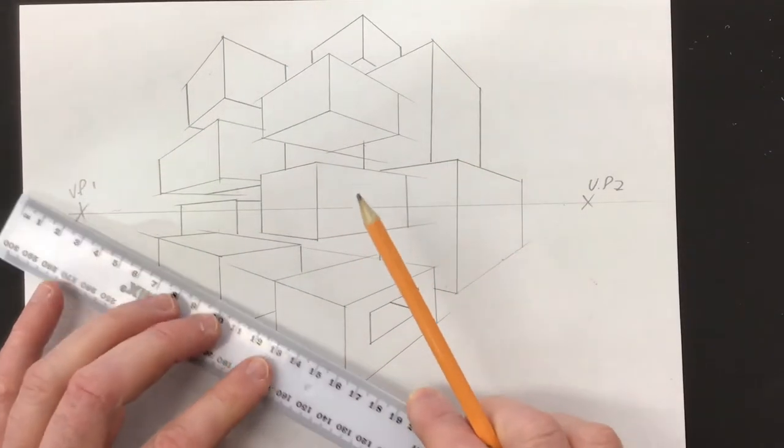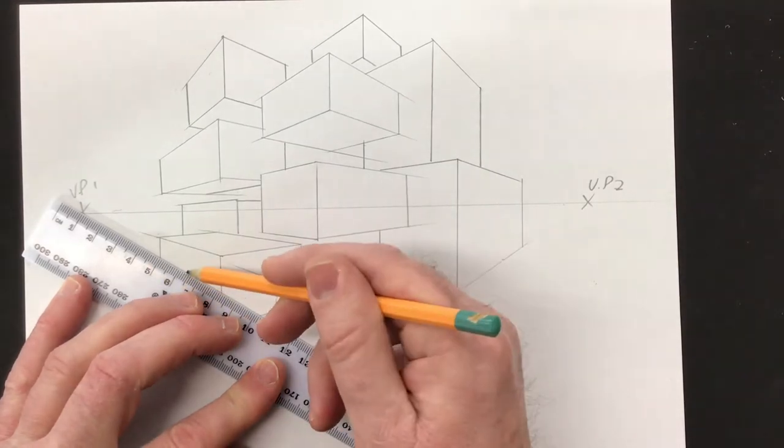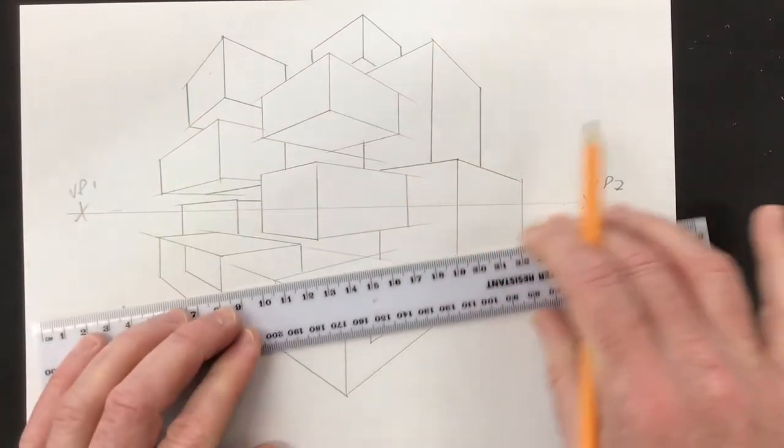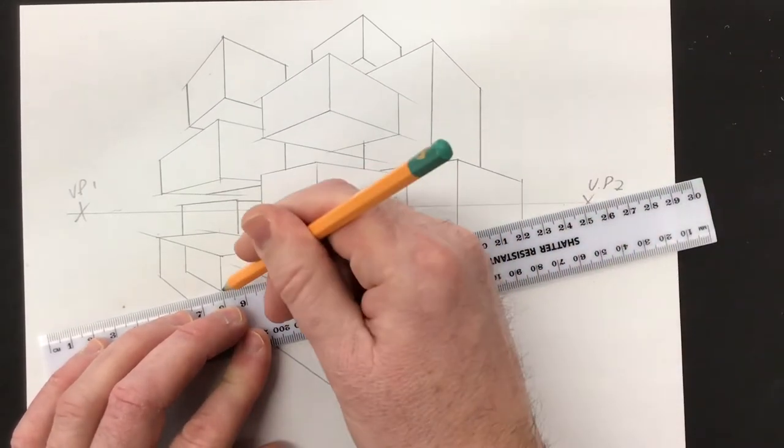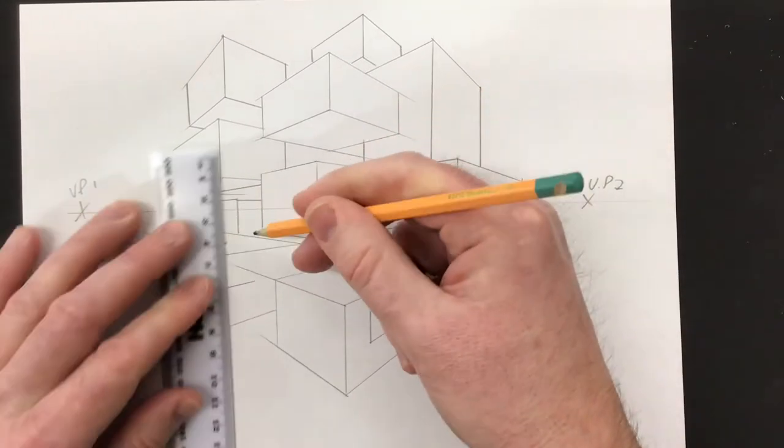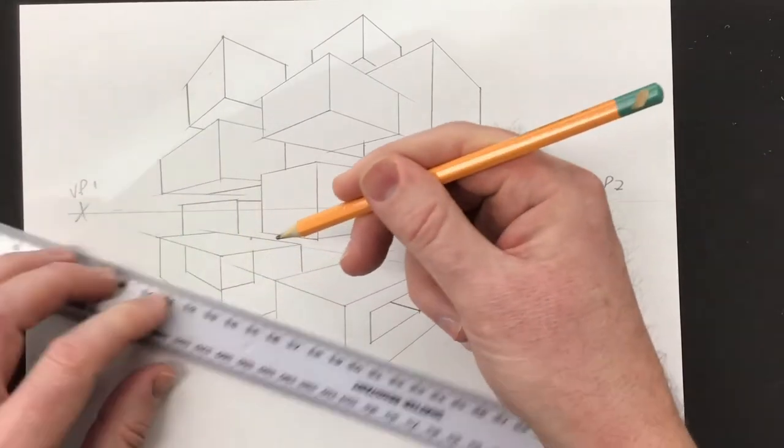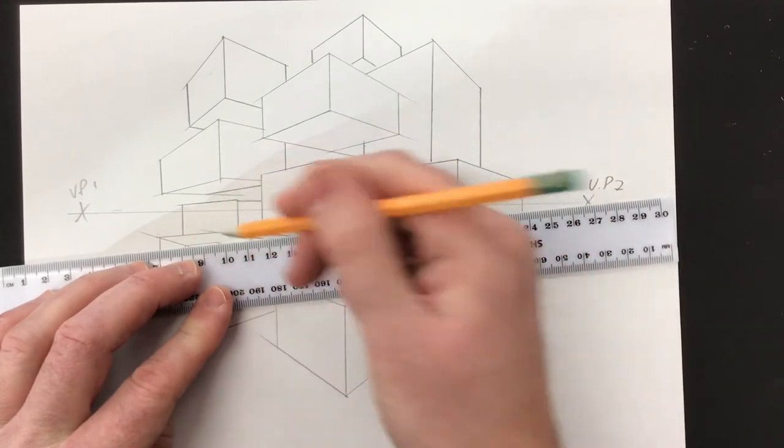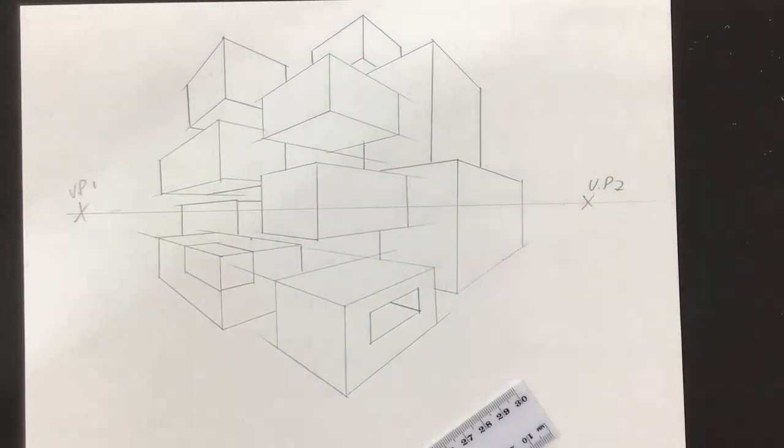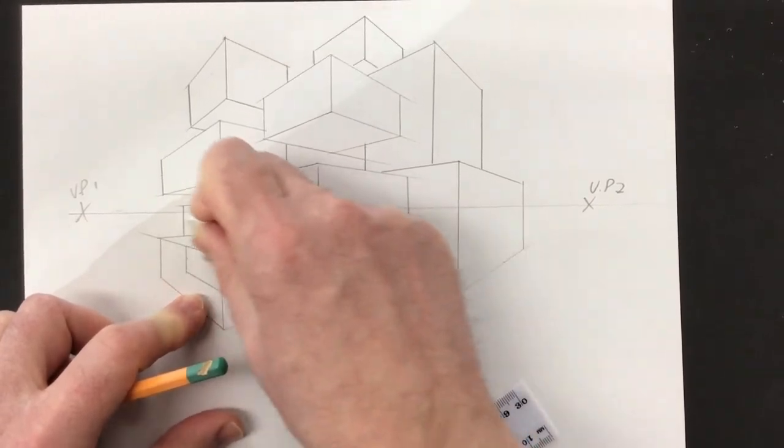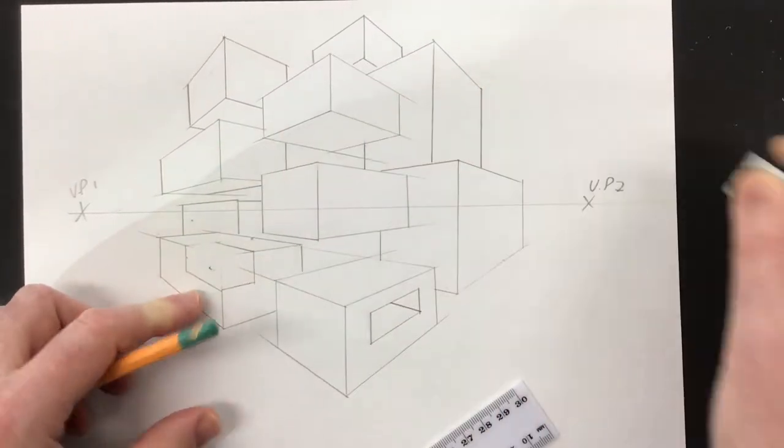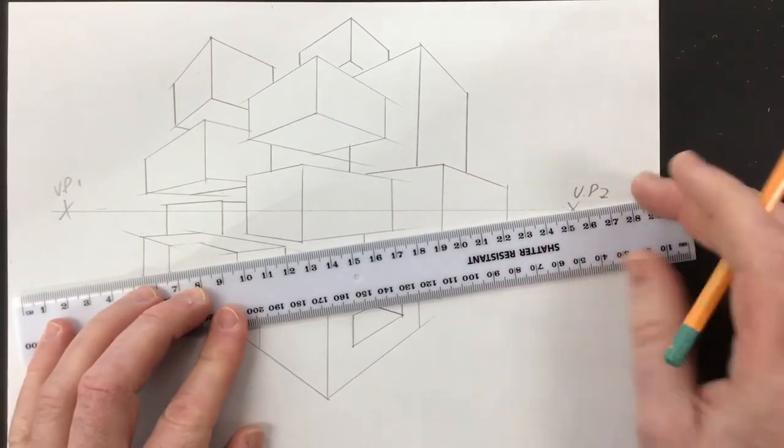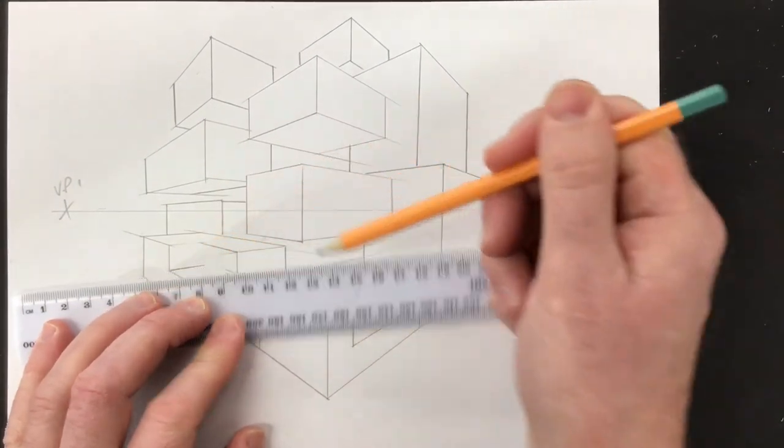So once you have done that, what you can look to do next is remove some segments. Now there are some other little videos on my YouTube channel that show you how to do this, but if you just watch what I'm doing. So again, the basic principle is drawing another shape onto a cube. This is where you need a rubber. This is why you go for light pencil as well, because that way then it's easy to rub out, and then you need to put the lines back in.